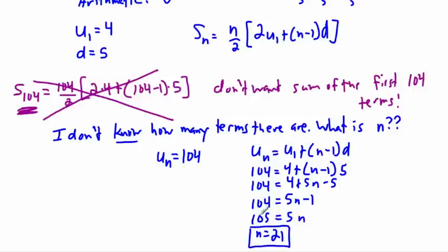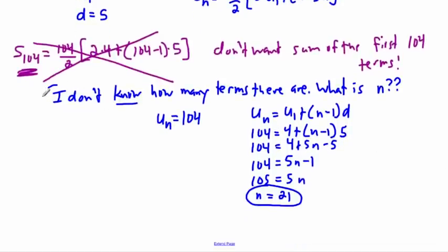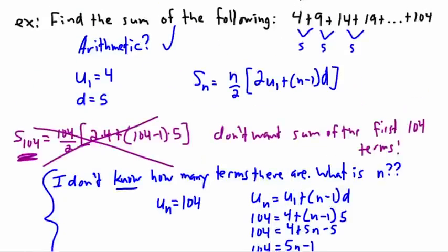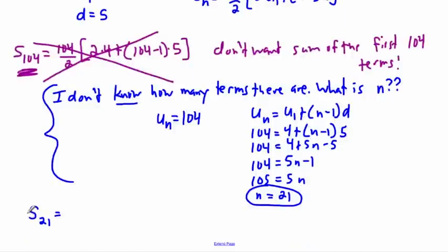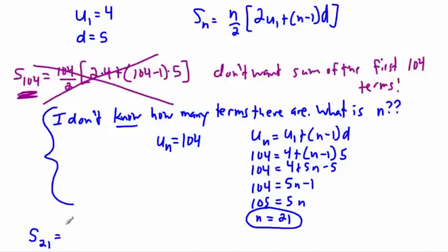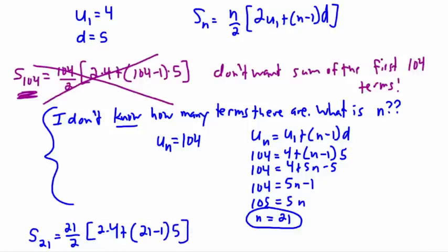So n equals 21. That means I need the sum of the first 21 terms — S₂₁. That was the key: I didn't have 104 terms. I had to figure out how many terms there were from 4 to 104, and there are 21. Now I can use the equation: S₂₁ equals 21 over 2, all that times 2 times u₁ which is 4, plus 21 minus 1, all that times d which is 5.